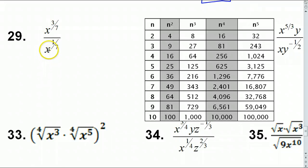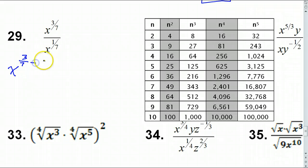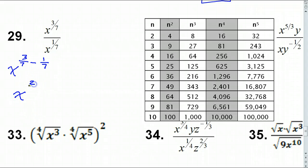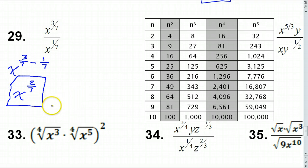Number 29: the bases are the same, so when you divide you subtract the exponents. This is going to be X to the 3/7 minus 1/7 power. 3 minus 1 is 2, so this gives X to the 2/7 power — that's it for number 29.